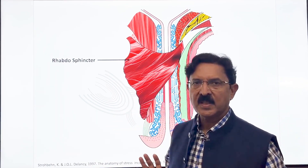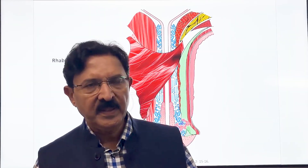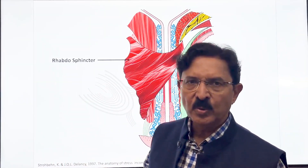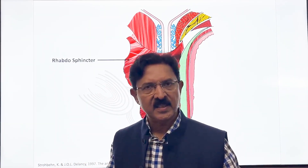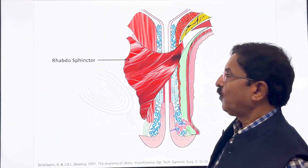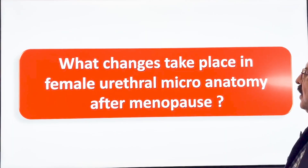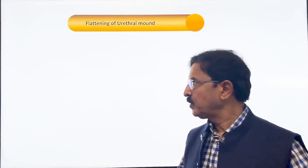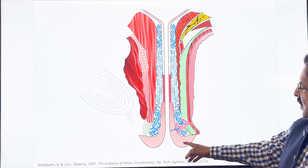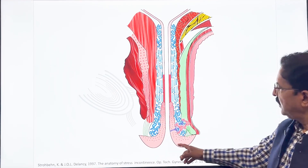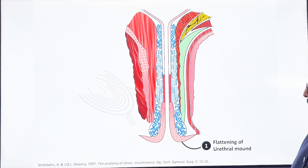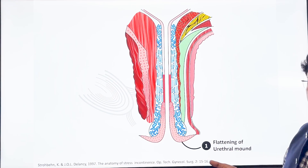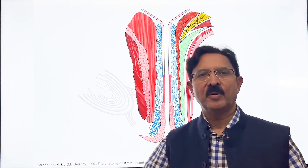This is the normal structure of female urethral micro-anatomy shown in a midline vertical sagittal section. Now, what happens when menopause occurs? The first change is a flattening of the urethral mound — this mound becomes flat, and as age advances, it becomes more and more flat.